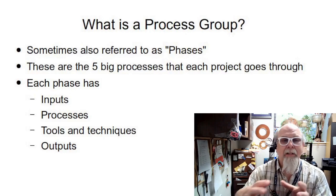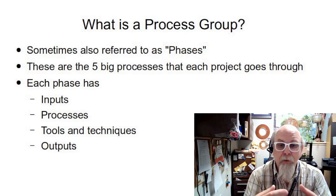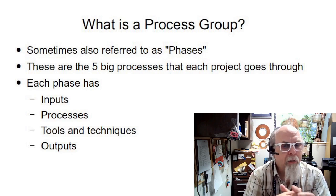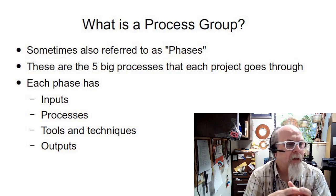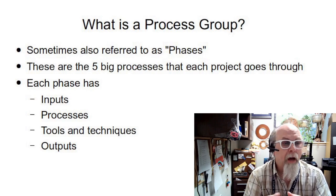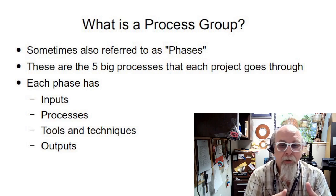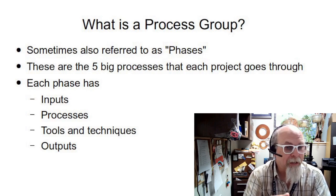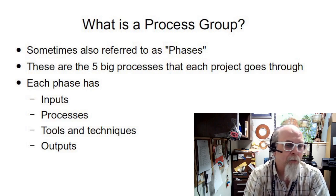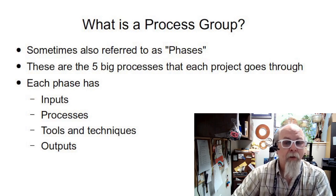There are five big processes that each project goes through as we work on a project. Remember our definition of a project: a temporary endeavor to do something. These are also sometimes called phases. Each of these process groups has inputs — things that go into the process group — processes within the process group, tools and techniques, and then each group has an output or group of documents that move on into the next process group until we finally wrap it up with the closing process.